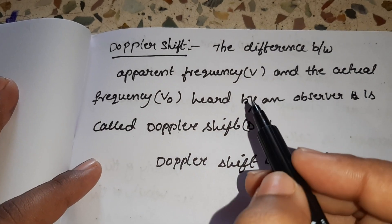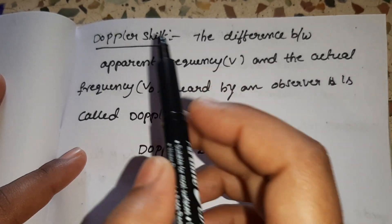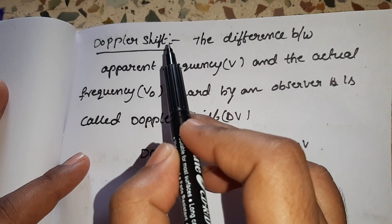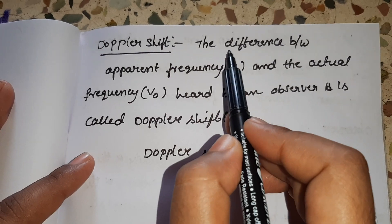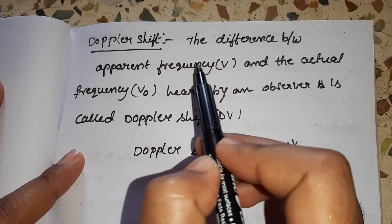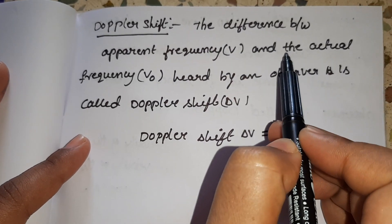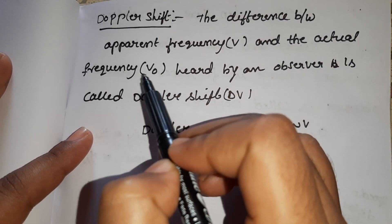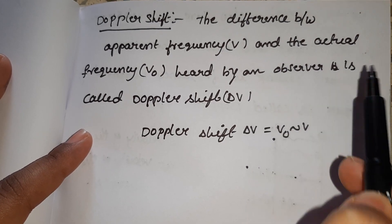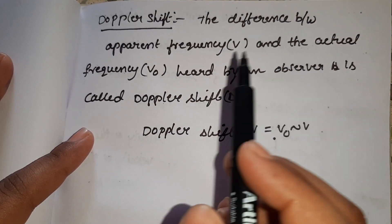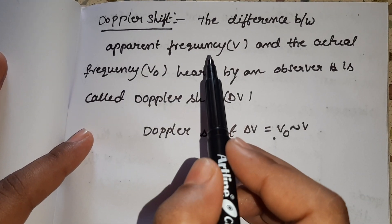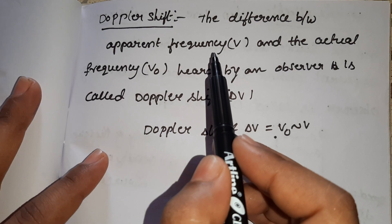Hello everyone. In this video I am going to discuss the Doppler shift. The Doppler shift says that the difference between apparent frequency and actual frequency heard by an observer is called Doppler shift. Apparent frequency means the frequency will change.